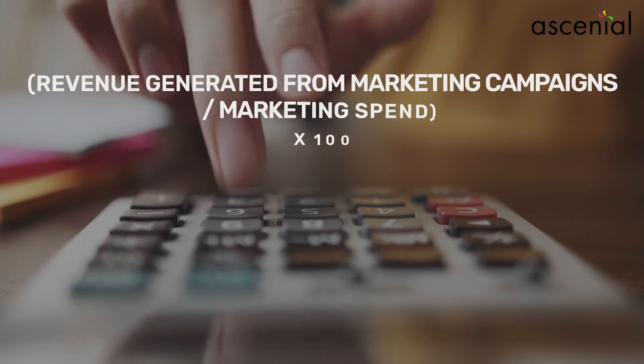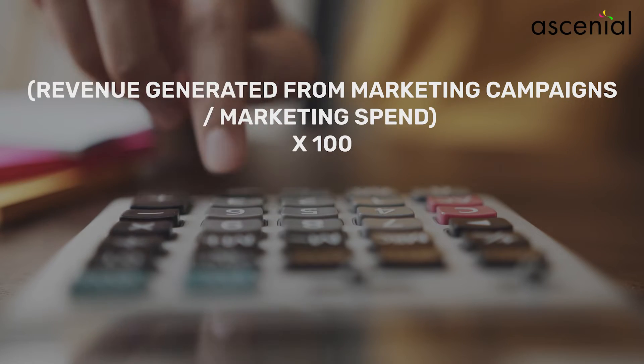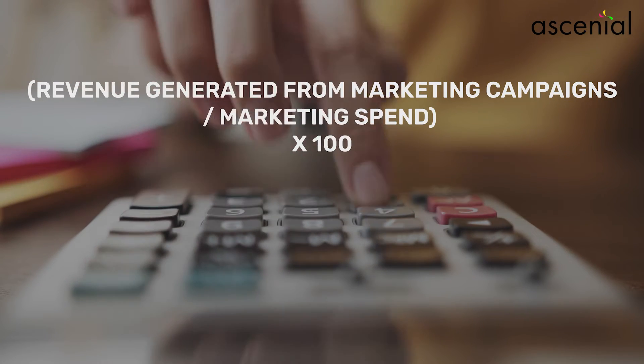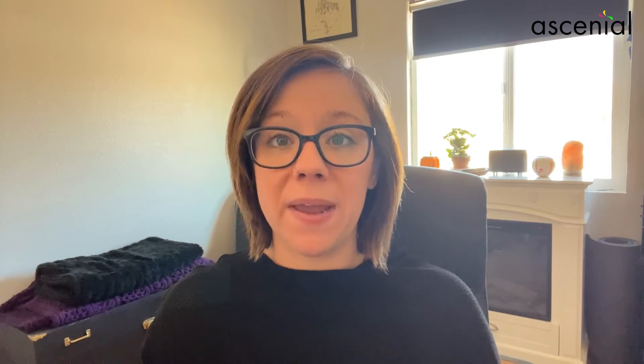Calculating MER is super simple. MER can be calculated using the following formula: MER equals revenue generated from marketing campaigns divided by your marketing spend, times by 100. Once you have the necessary data, you can plug it into that formula to calculate your MER. A higher MER indicates a more efficient marketing campaign, while a lower MER may indicate that there's still a need to optimize that campaign further.